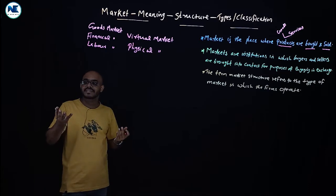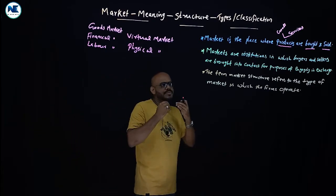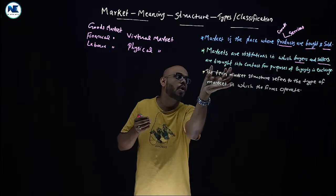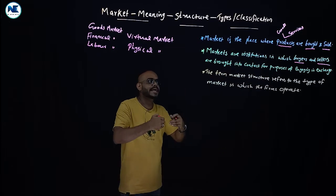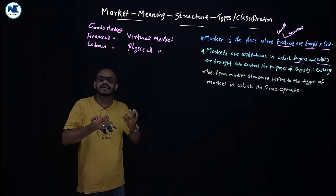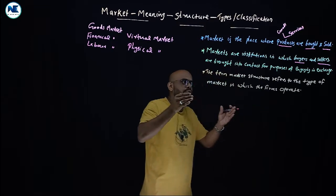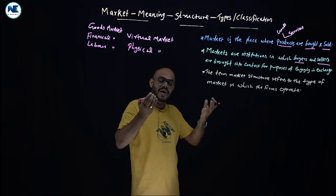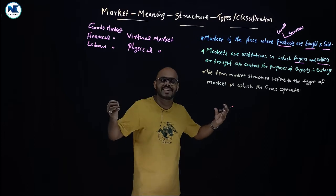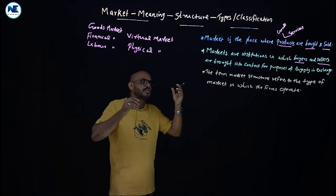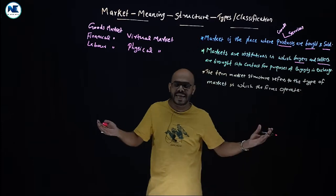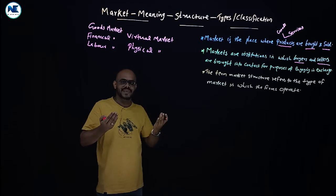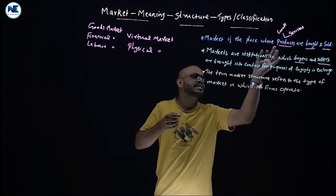We can simply say markets are institutions or systems in which buyers and sellers are brought into contact for purposes of engaging in exchange — that is, the buying and selling of products. Markets are institutions in which buyers, who want to buy, and sellers, who want to sell, are brought into contact for purposes of engaging in exchange.